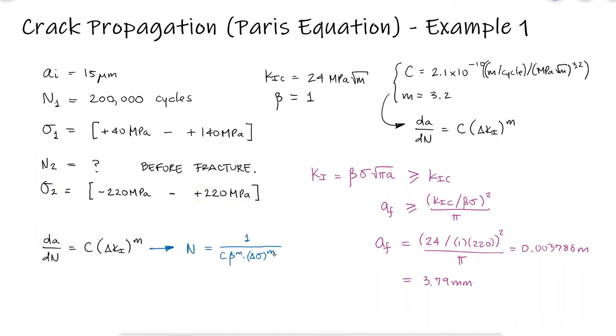To know how many cycles it would take the crack to reach that length, we need to find the length of the crack at the beginning of the second stage of the loading, which is the same as the final crack length after the 200,000 cycles of the first stage of the loading.